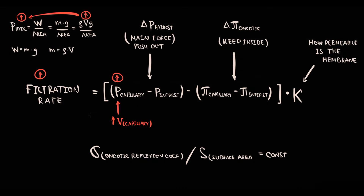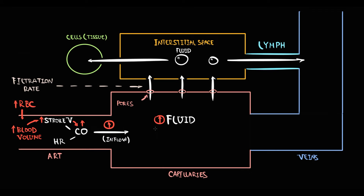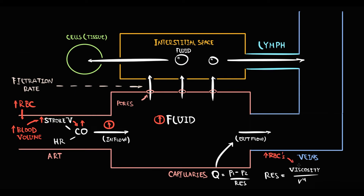The inflow of blood to capillaries is determined by cardiac output — stroke volume multiplied by heart rate. In polycythemia, increased red blood cells cause increased total blood volume, thereby increasing stroke volume and cardiac output, so more fluid flows into capillaries. The outflow of blood from capillaries equals pressure difference divided by resistance, and resistance is inversely proportional to the fourth power of radius. In polycythemia, increased red blood cells cause increased blood viscosity, so resistance increases and flow decreases.